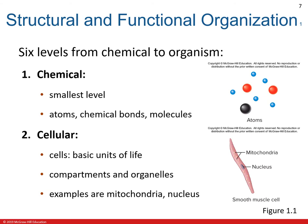The body can be studied at six structural levels: chemical, cell, tissue, organ, organ system, and organism. The first level is the chemical level. The structural and functional characteristics of all organisms are determined by their chemical makeup. The chemical level of organization involves how atoms, such as hydrogen and carbon, interact and combine into molecules. This is important because a molecule's structure determines its function.